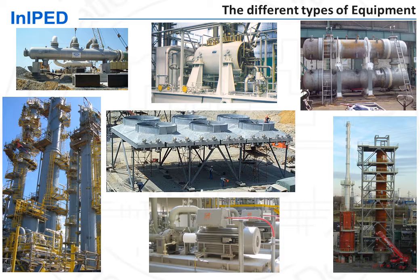Equipment are grouped in four categories. Static equipment, which are pressure vessels and heat exchangers. Rotating equipment, which are pumps, compressors, and turbines. Fired equipment, which are furnaces, boilers, and flares. And the last category is packages.